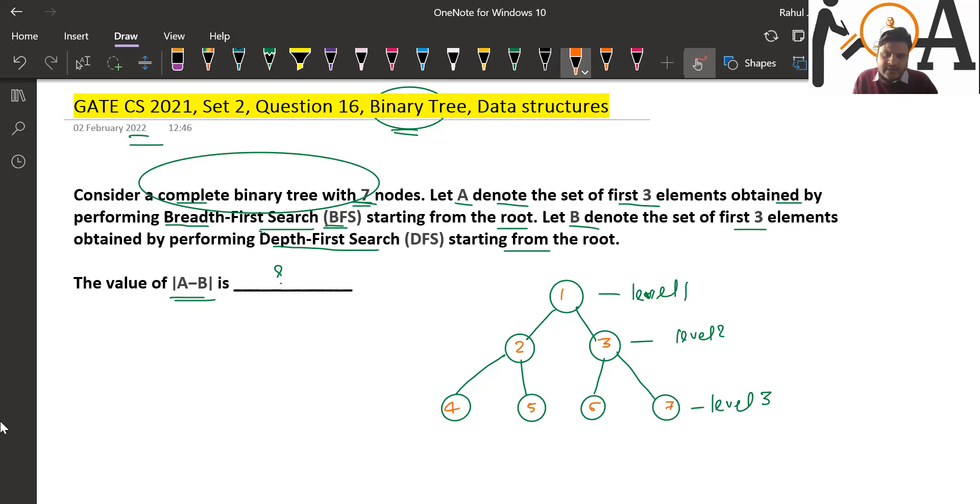Set A is obtained by performing BFS, which means BFS works level by level. So A is going to contain {1, 2, 3} because it's performing BFS: 1, then 2, then 3.